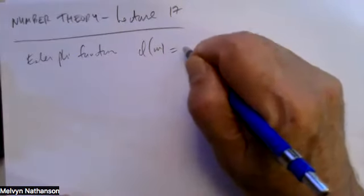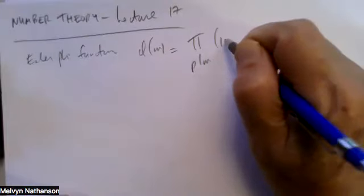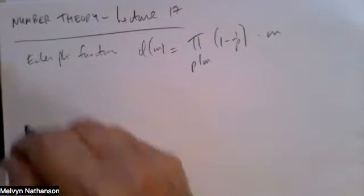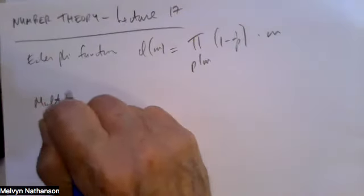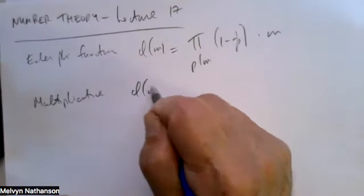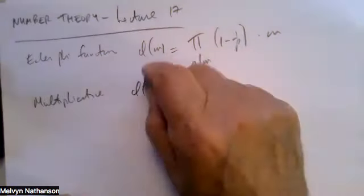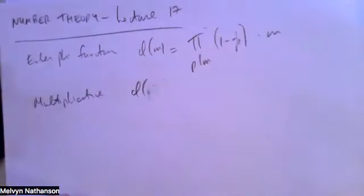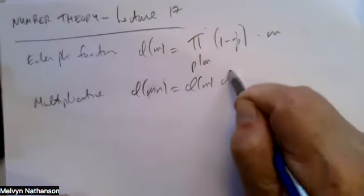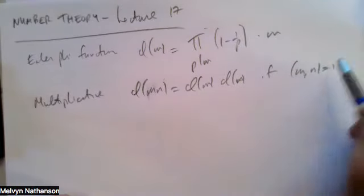First, a nice formula: phi(m) is the product over all distinct primes p dividing m of (1 minus 1/p), times m. Second, that the Euler phi function is multiplicative — phi(m·n) equals phi(m) times phi(n), if the greatest common divisor of m and n is 1.